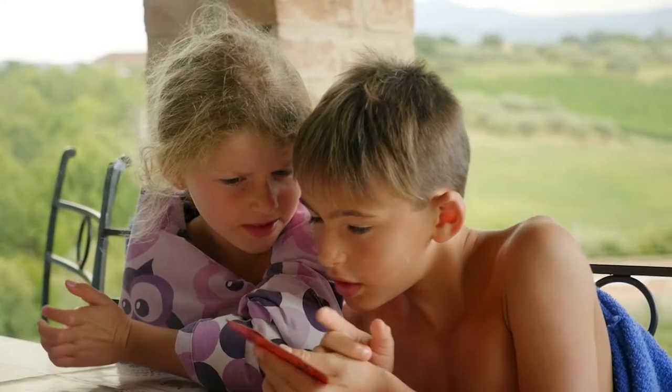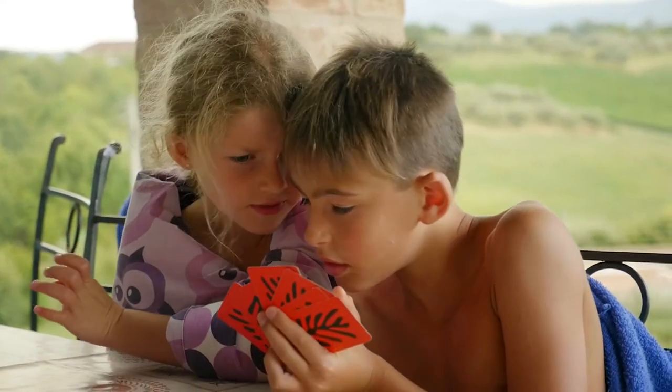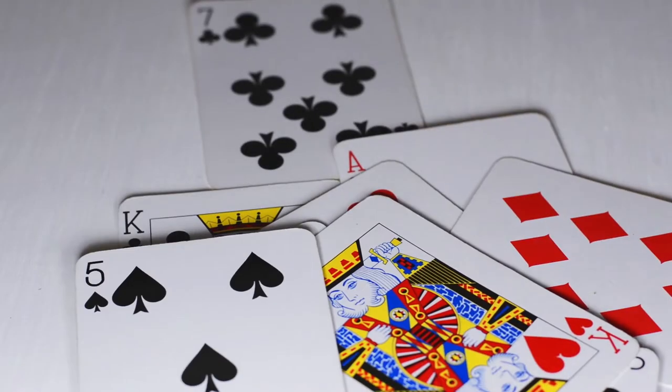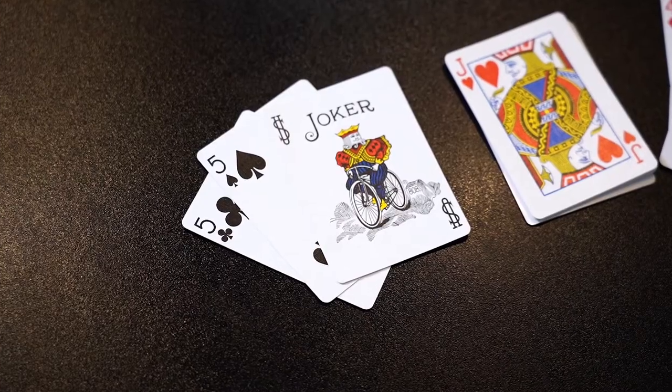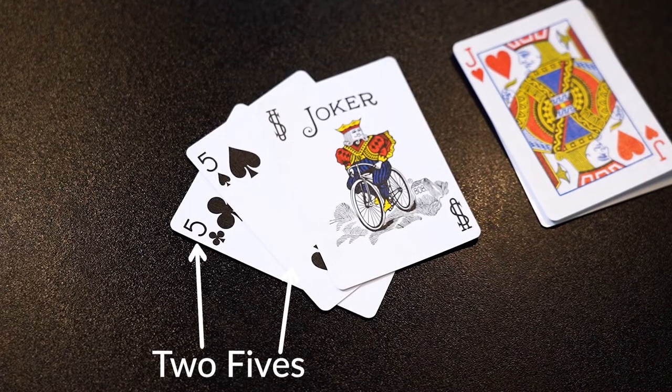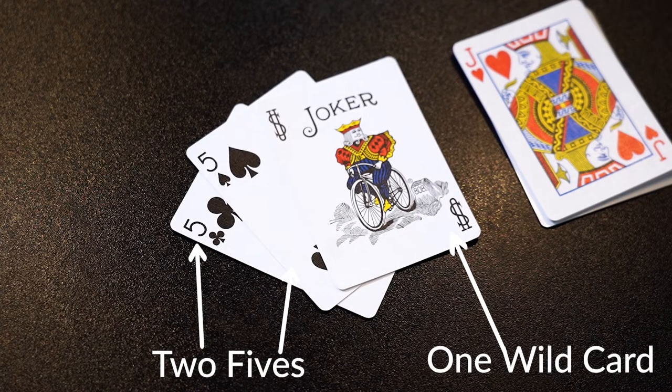This type of meld is required before going out and winning a particular deal. So, for example, if you have a meld of fives and you're using wild cards, you must have at least twice as many fives as there are wild cards.